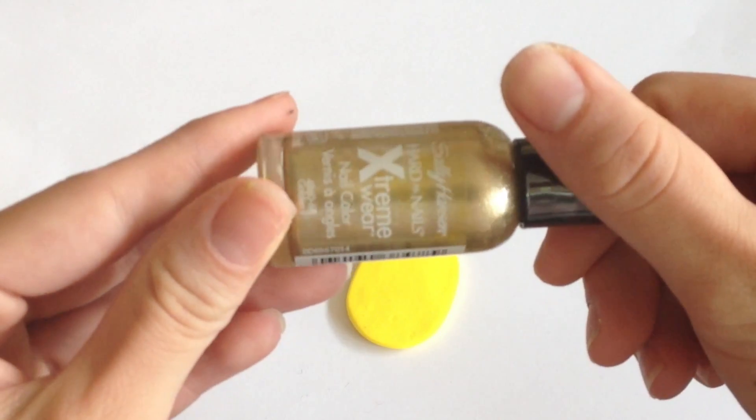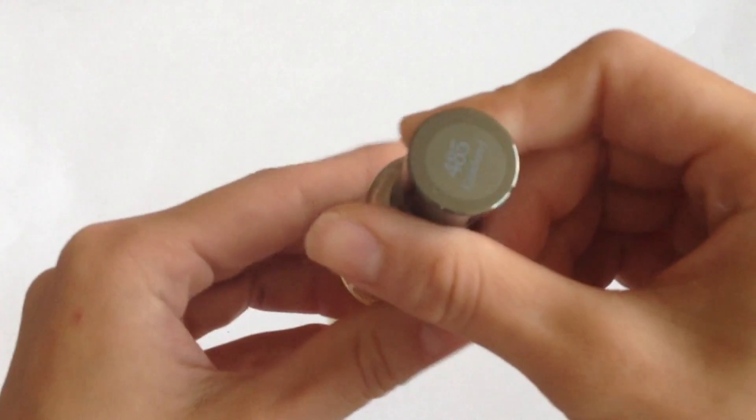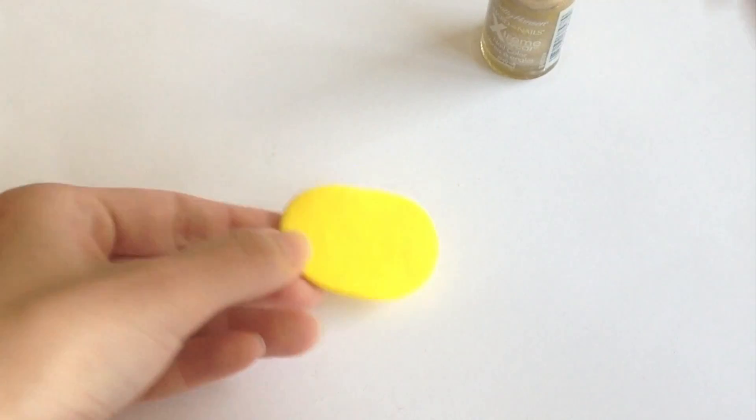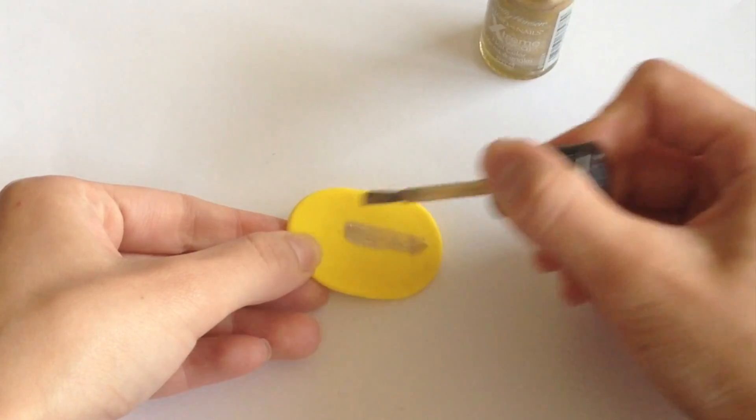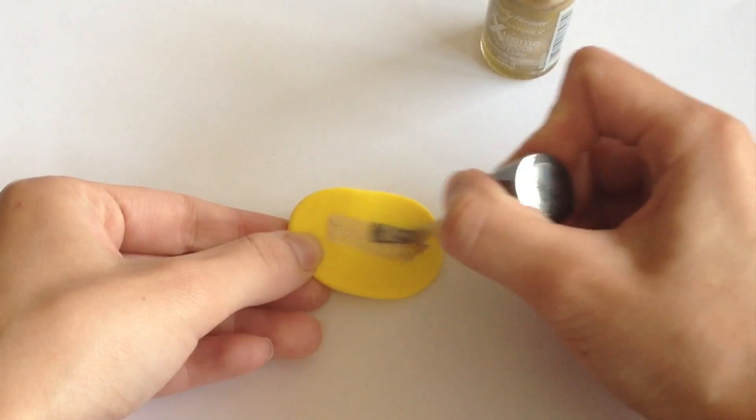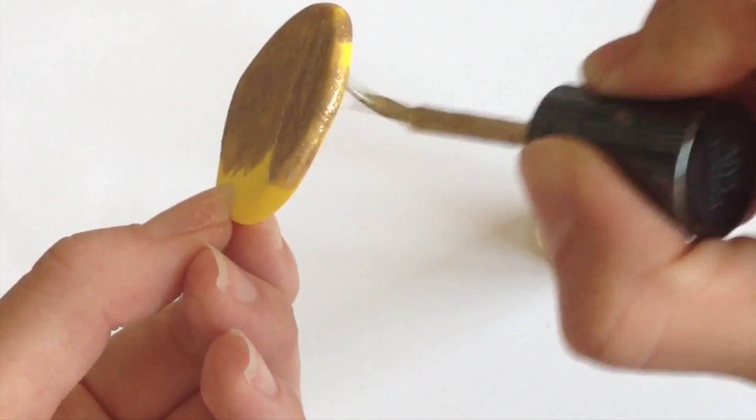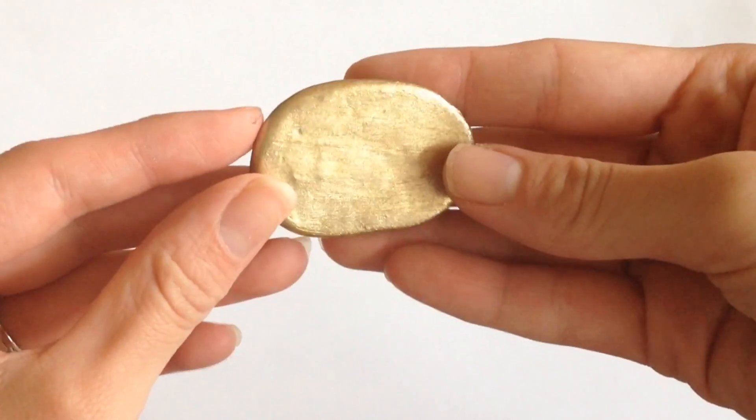And with some nice bold colored nail polish I'm using the one from Sally Hansen Xtreme and I'm going to paint this all over until it makes a nice gold coin. The key is to paint multiple layers until it's really opaque. You don't want to be able to see any of the yellow clay on the very bottom.